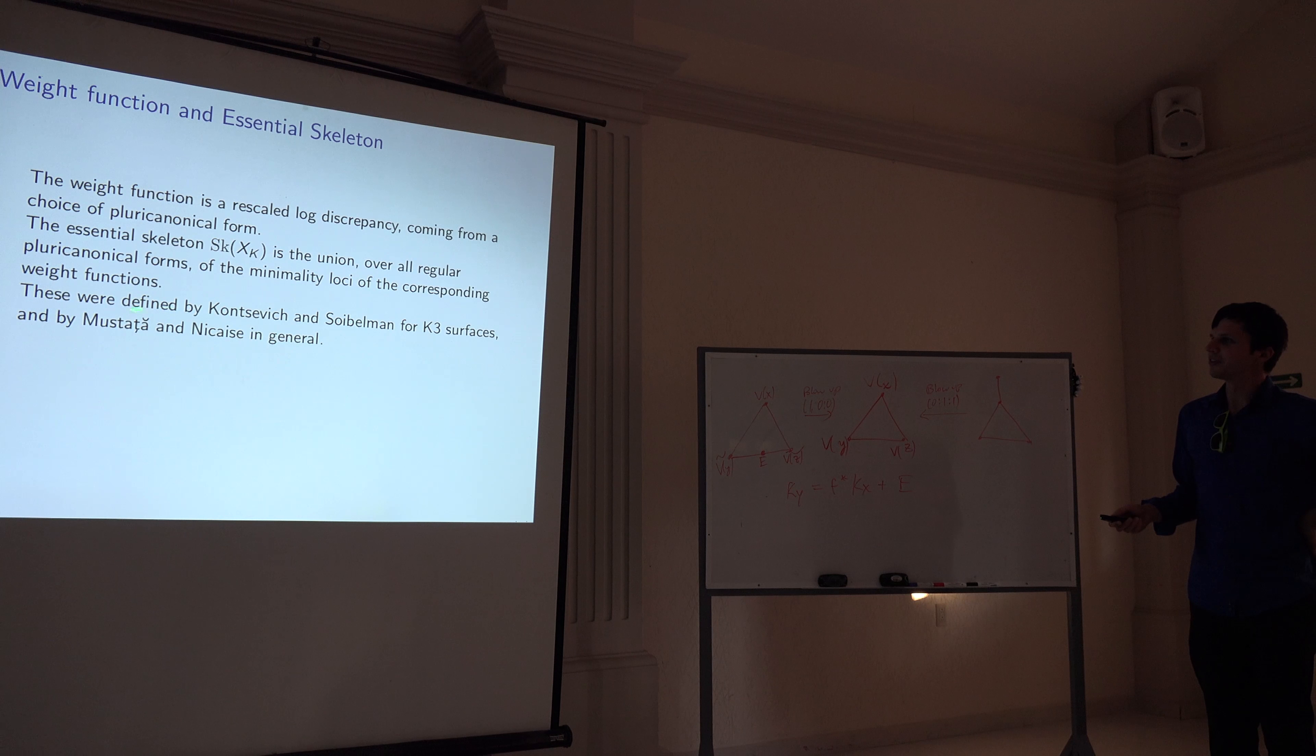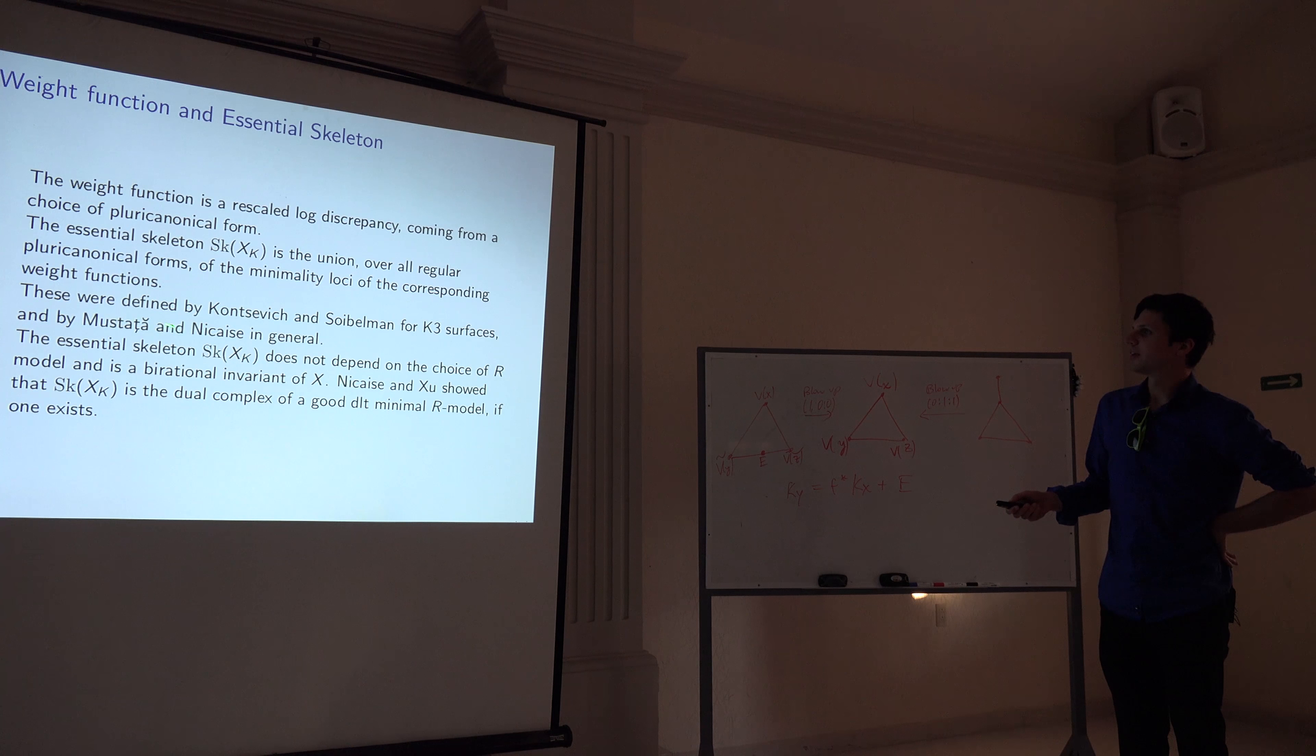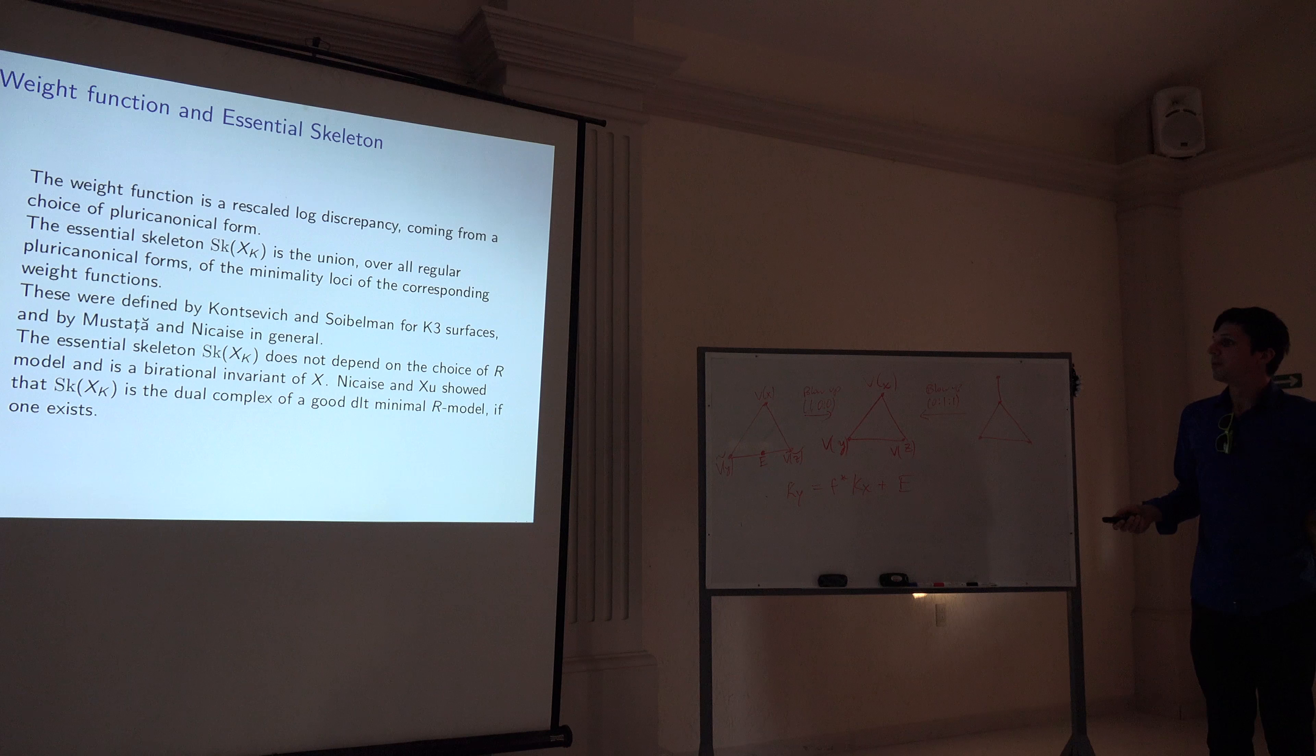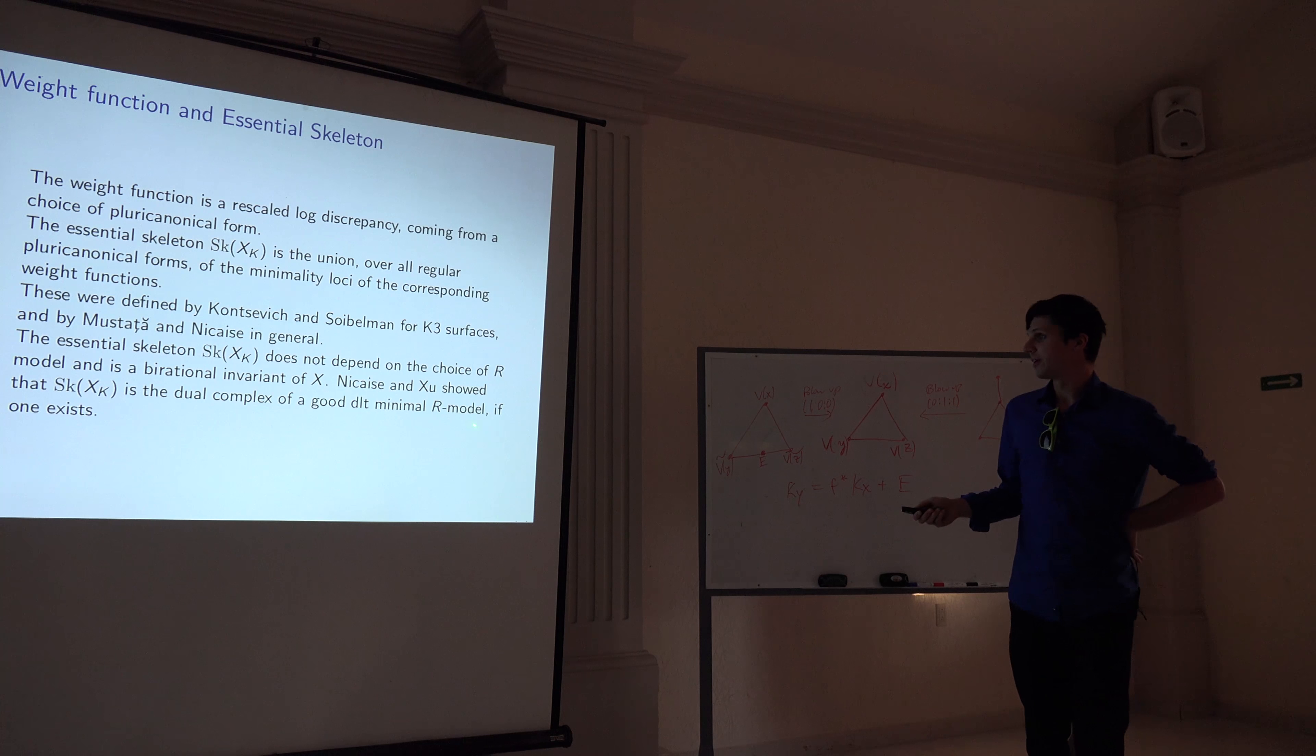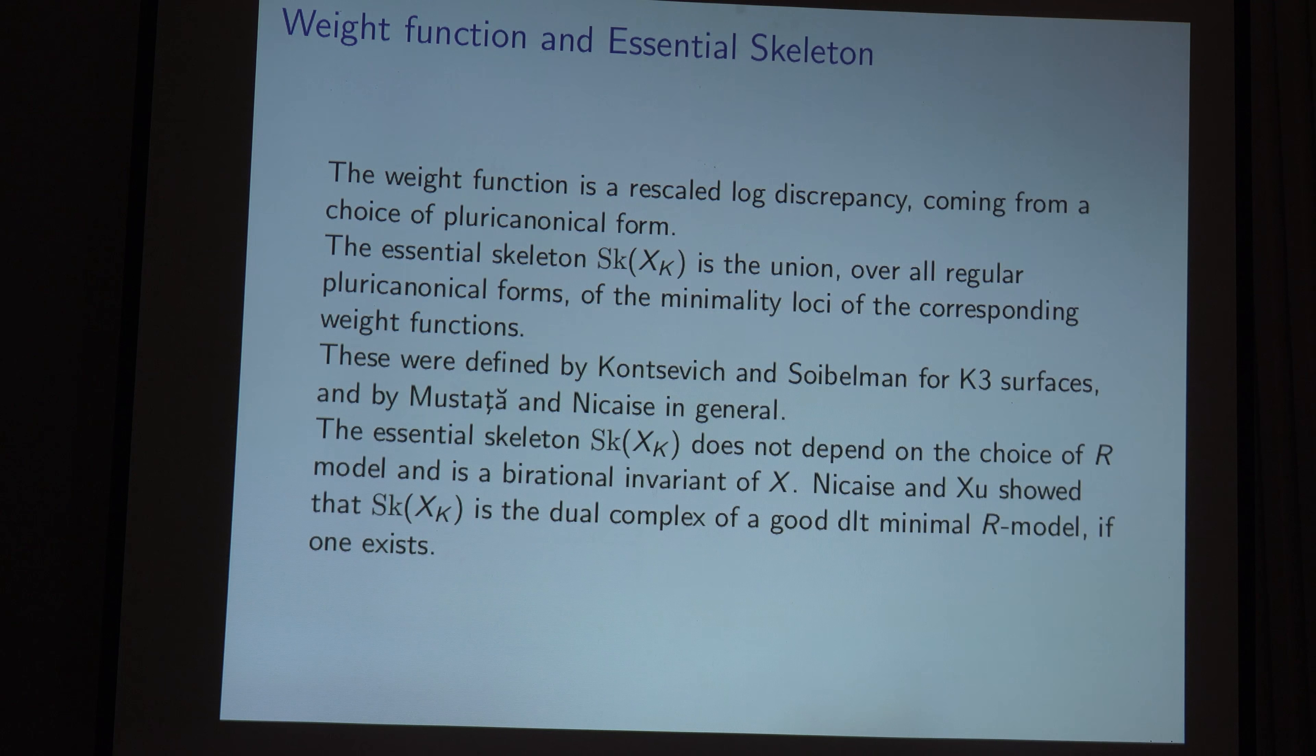And so then Mustata and Nicaise noticed this, and noticed that you could do this in a much larger generality. And in fact, this isn't on the slide, but one thing that we did is that we extended their definition when we lose regular and take instead log regular. And so this gives us a broader definition of a skeleton. So again, the nice thing about this is that it doesn't depend on the choice of R model, and it's also a birational invariant of X, which is the variety over, this should be X_K, let's say, variety over K. So, and also, so you might want to say, okay, well, is this the dual complex of anything? And in fact, if you have the minimal model program, Nicaise and Xu showed that if you have a good DLT minimal R model, then this essential skeleton can be identified with that dual complex.